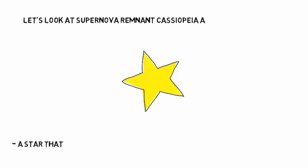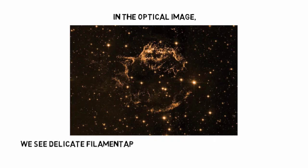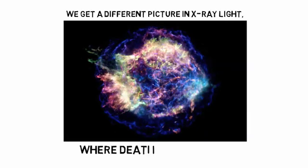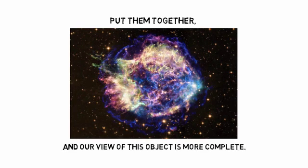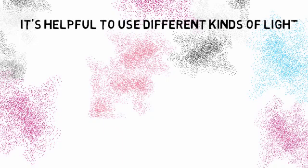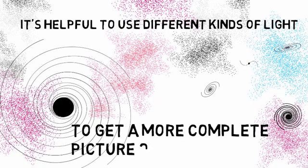Let's look at supernova remnant Cassiopeia A, a star that exploded over 300 years ago and is spewing out its innards. In the optical image, we see delicate filamentary structure at around 10,000 degrees. We get a different picture in X-ray light, where death comes alive. Put them together and our view of this object is more complete. It's helpful to use different kinds of light to get a more complete picture of our universe.